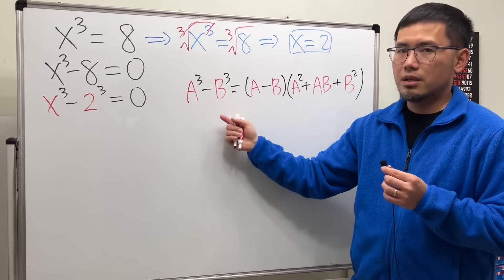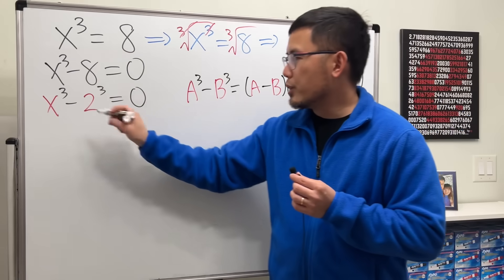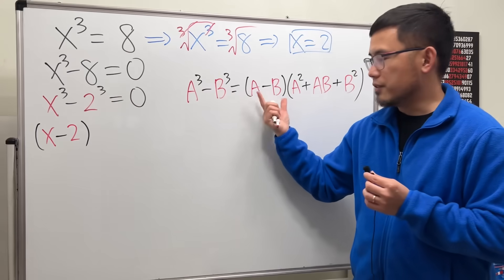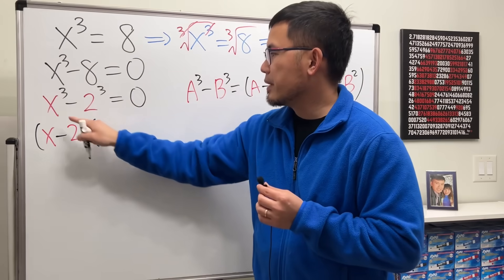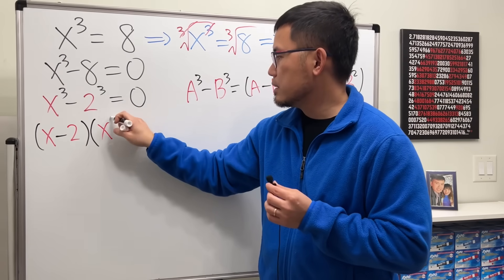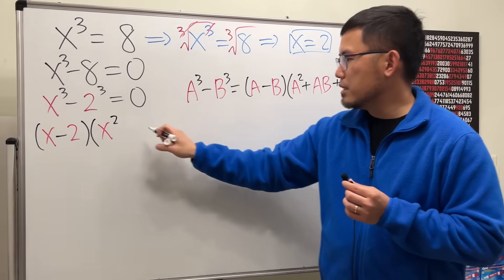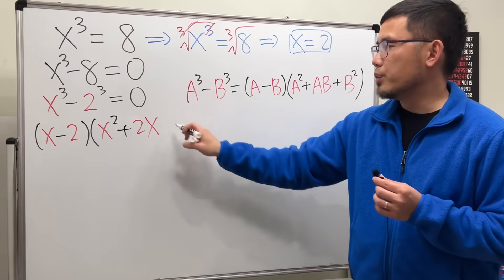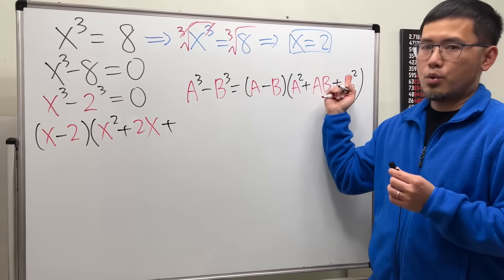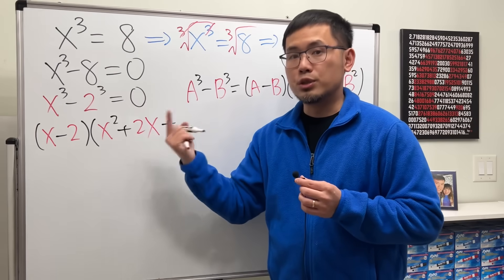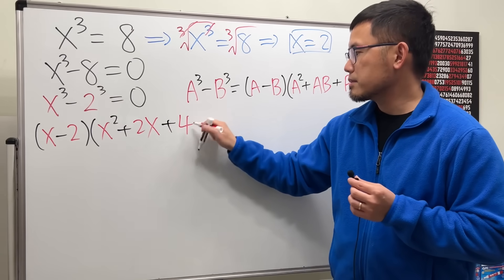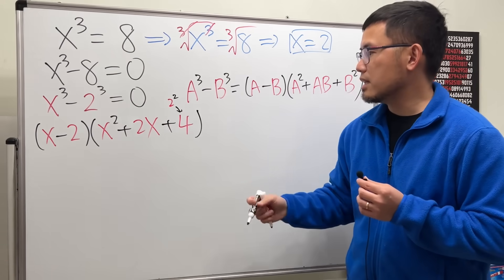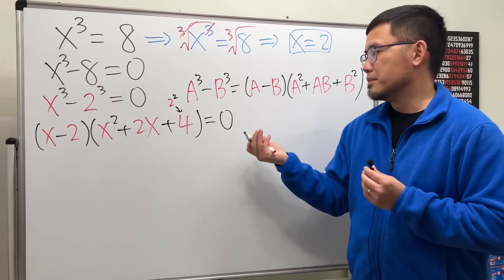Here x is a and 2 is b, so applying the formula we get x minus 2 for the first part, multiplied by x squared plus 2x plus 4 — because ab is 2 times x, and b squared is 2 squared which equals 4 — and all of that equals zero.